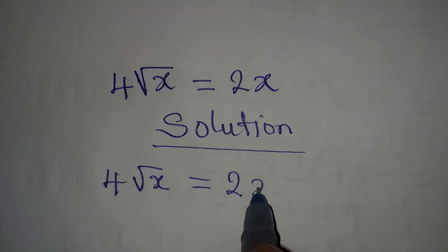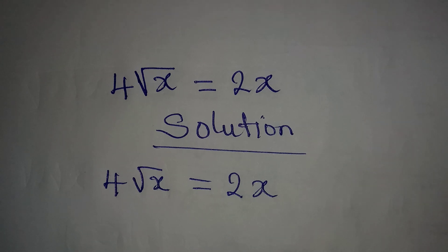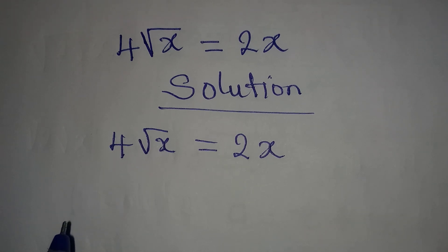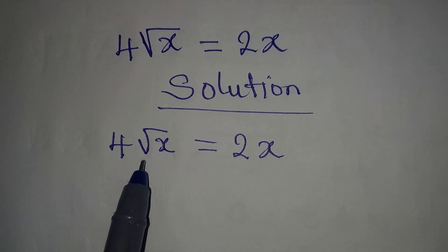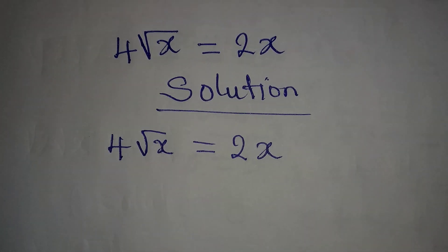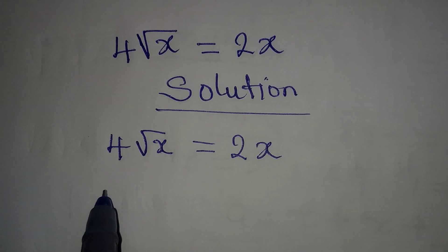Now some persons make a mistake to call this the fourth root of x. This is not fourth root of x but 4 root x. Look at how you write fourth root of x.